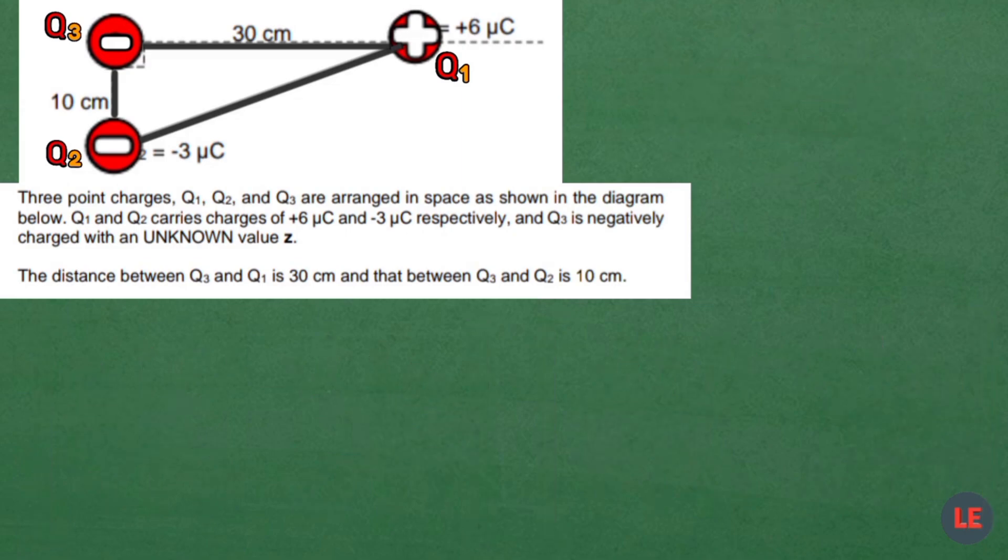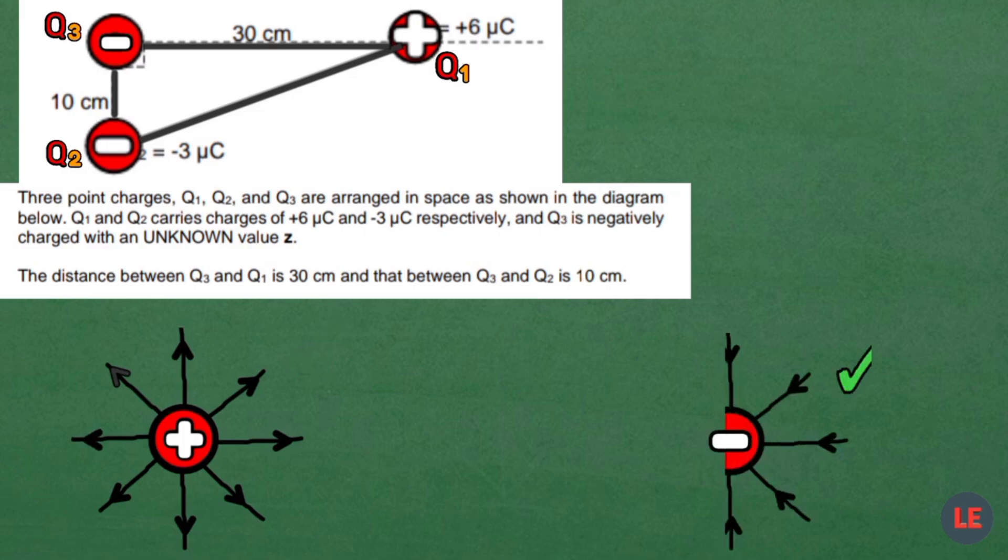And on single point charges, on positive charge the field lines are drawn as so. On negative charge, the field lines around it are drawn as so.